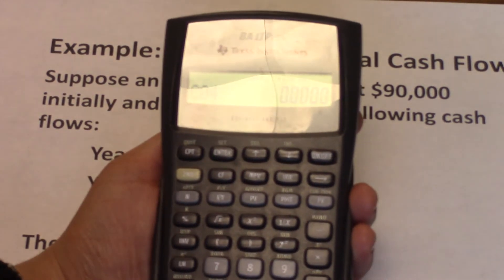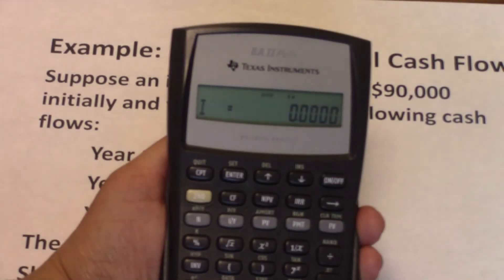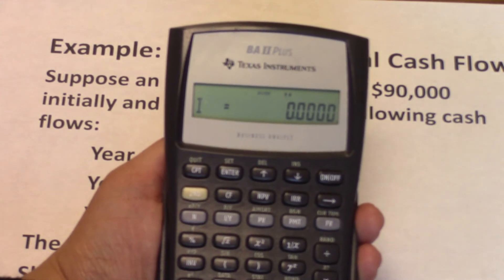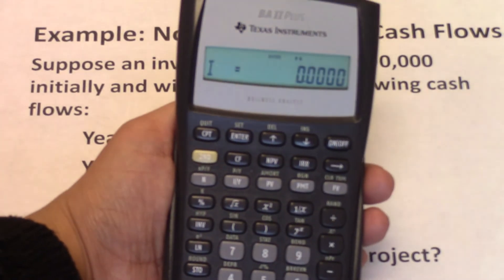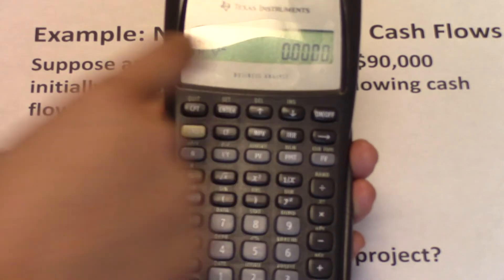We're done importing all of our cash flows. Now we can just hit NPV. So you hit NPV, you're going to be asked for the I, which is the interest rate required by our investors for this project. And the interest required is 15%. So 15, enter, down arrow.